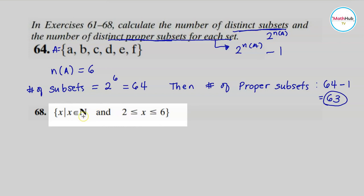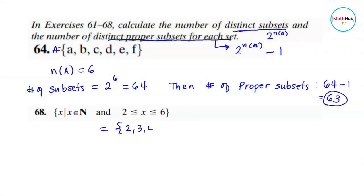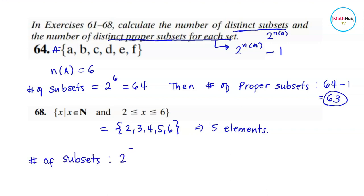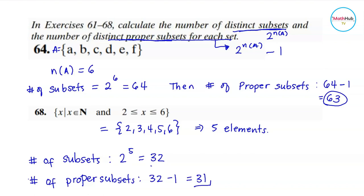For number 68, we have natural numbers between 2 and 6 inclusive, which is {2, 3, 4, 5, 6} — five elements. The number of subsets is 2⁵ = 32. The number of proper subsets is 32 − 1 = 31.